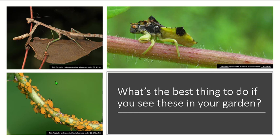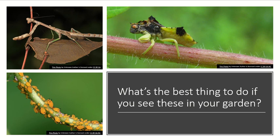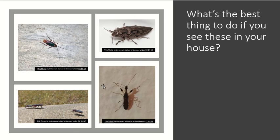You might also see something like a praying mantis — even one that's more camouflaged than usual — and not know what to do about it. This is actually considered a beneficial bug in the garden because it eats other insects that prey on your garden plants. The top right here is a predator bug called an ambush bug, which is a predator of pollinators. If you see a lot of those in your garden, you might be concerned it's eating pollinators that help your plants produce fruit.